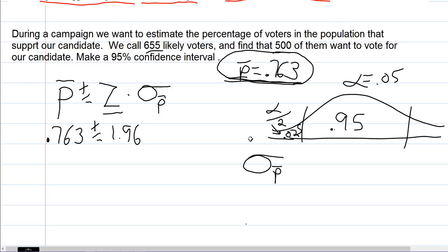Different people use different notations. It's not really important to me, the notation, as long as we know what we're doing. So we take our p bar, 0.763, times 1 minus p bar, 1 minus 0.763, divided by n, 655 likely voters. One thing I see people getting confused on sometimes is, what's our sample size? Is it the 500 that said yes or is it 655? It's the total number of people we asked the question to.